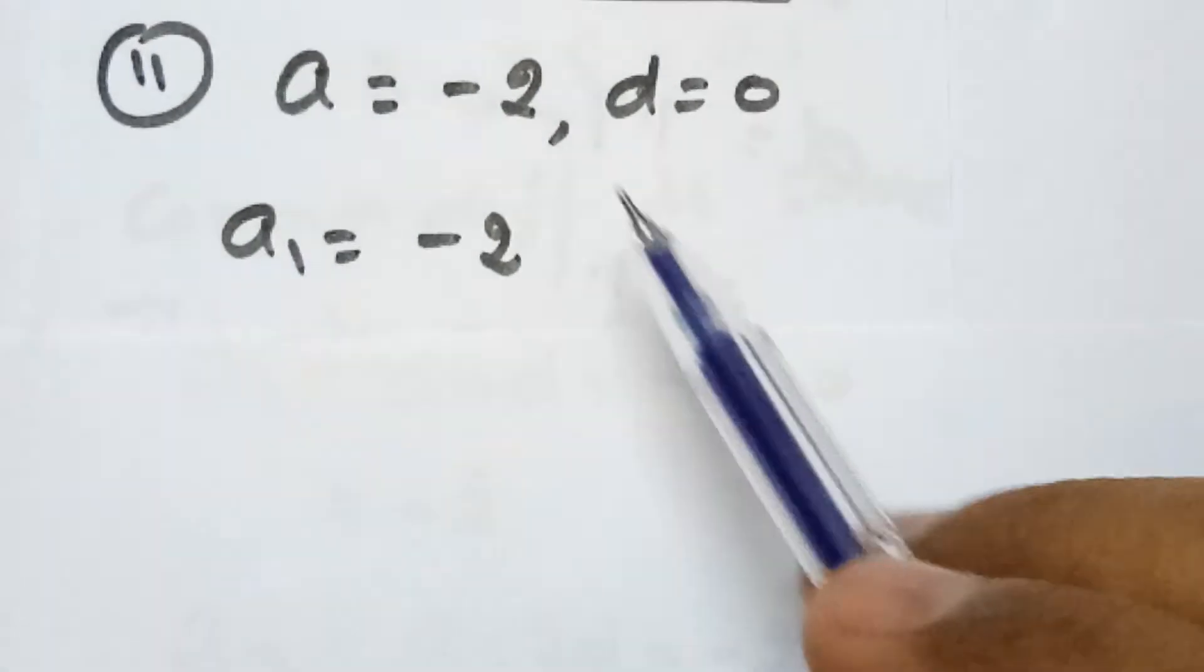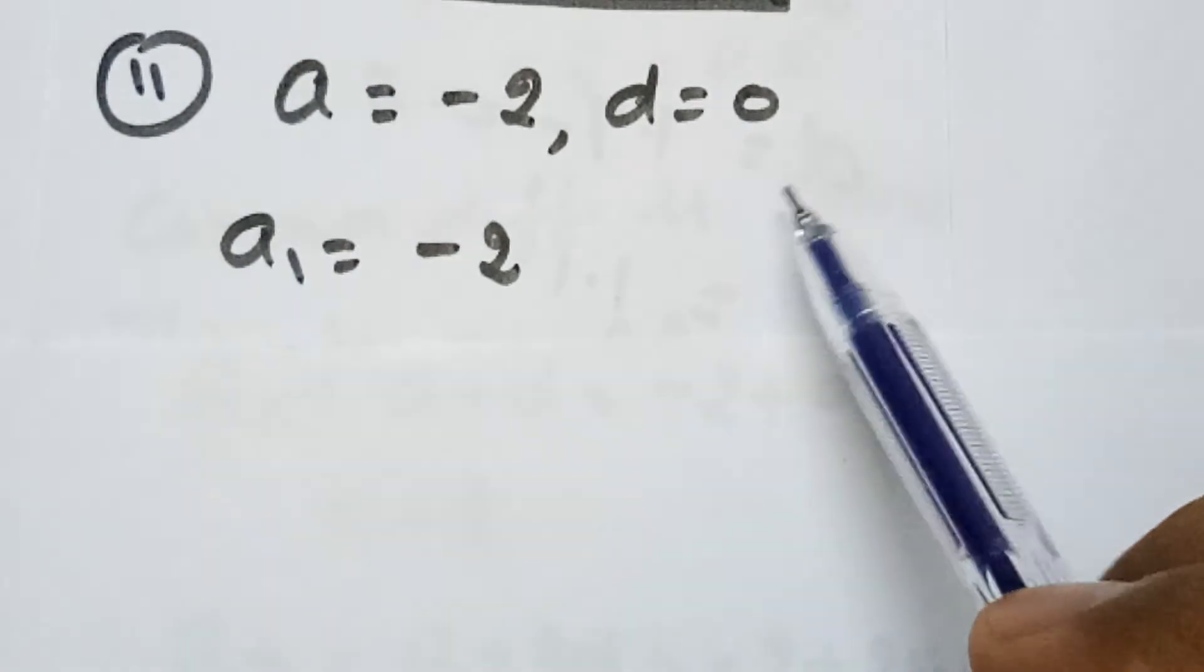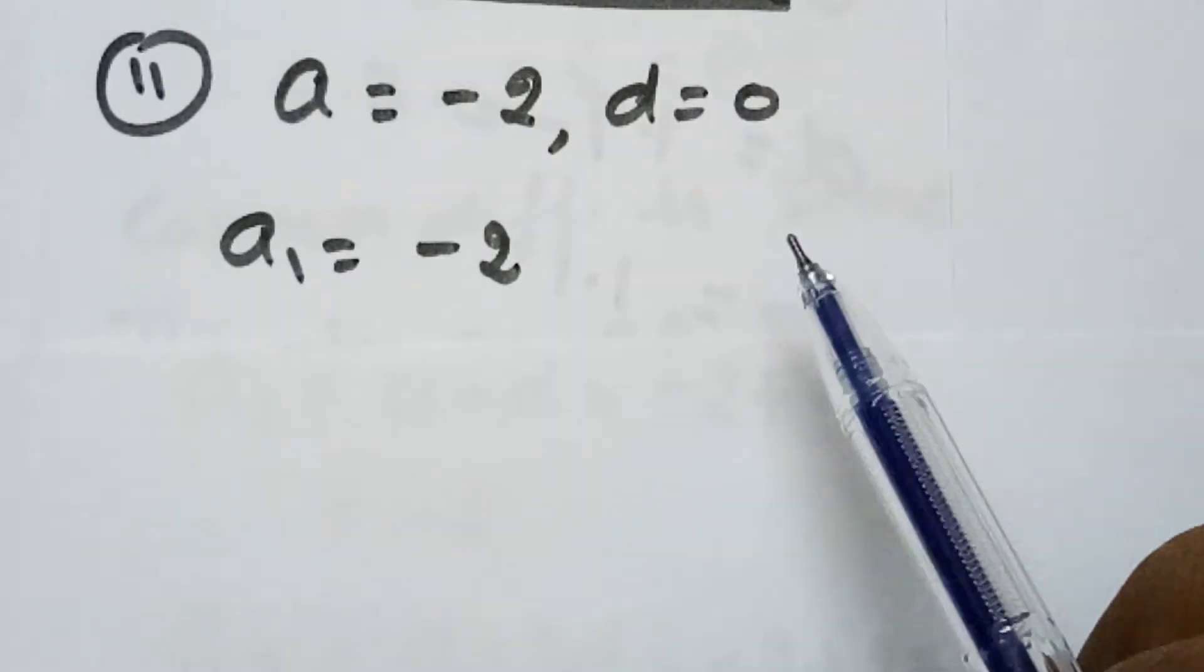Students, this question is of AP, where it is given that A equals minus 2 and D equals 0. We need to find the first four terms of this AP.